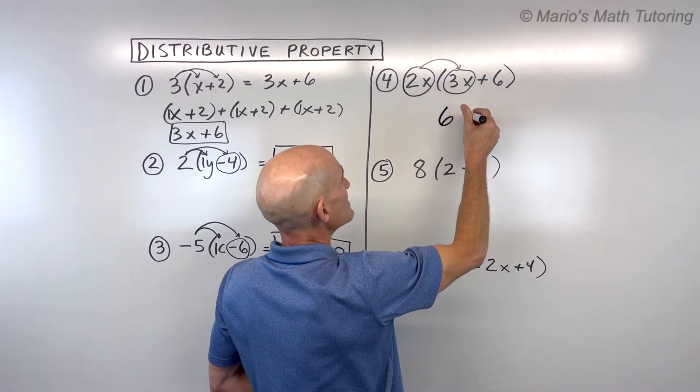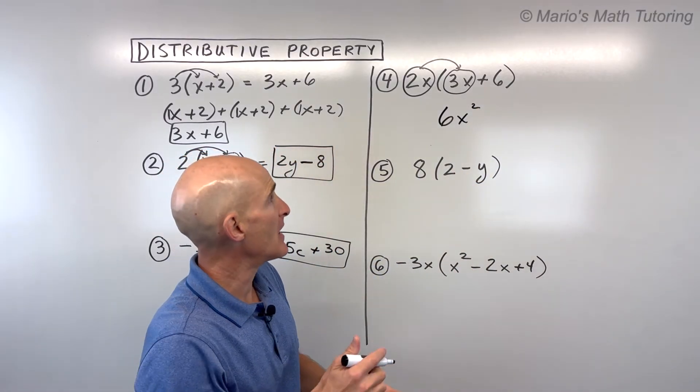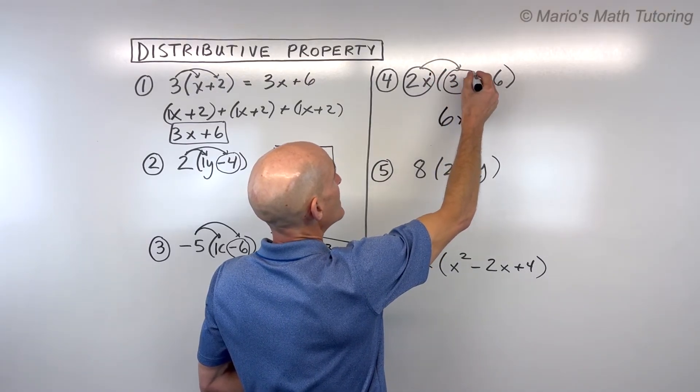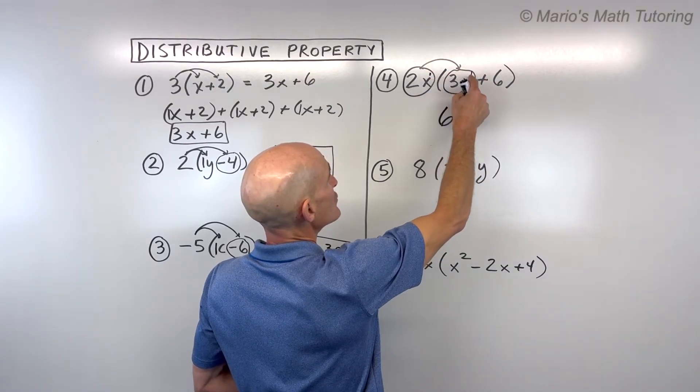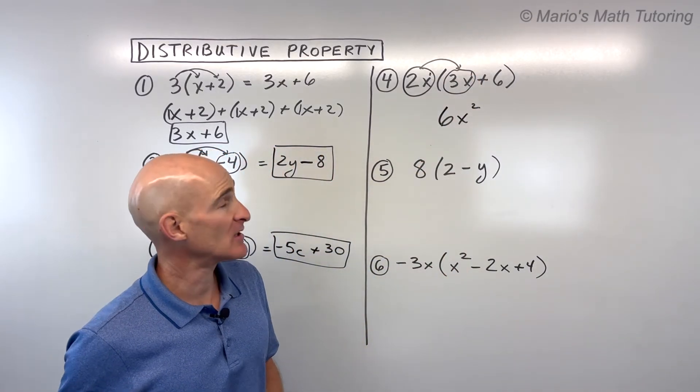x times x is x squared. Now, remember the rules of exponents. When you multiply and the bases are the same, see, x and x are the same base, you add the exponents. So if there's not an exponent, it's understood to be a 1. 1 plus 1 is 2. Okay, so that's how we're getting the 6x².